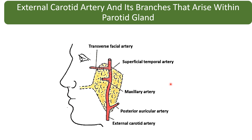So these are the three structures that pass through the parotid gland: most superficial is the facial nerve, next is the retromandibular vein, and third is the external carotid artery. The three branches of the external carotid artery that arise within the parotid gland are the posterior auricular artery and the two terminal branches — the maxillary and the superficial temporal arteries.